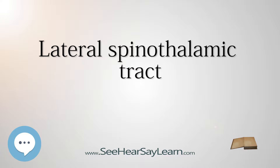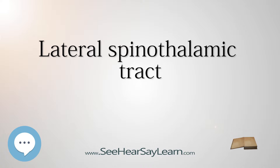It carries protopathic sensation to the thalamus. It is composed primarily of fast-conducting, sparsely myelinated A-delta fibers and slow-conducting, unmyelinated C fibers. These are secondary sensory neurons which have already synapsed with the primary sensory neurons of the peripheral nervous system in the posterior horn of the spinal cord, one of the three gray columns. Together with the anterior spinothalamic tract, the lateral spinothalamic tract is sometimes termed the secondary sensory fasciculus or spinal lemniscus.